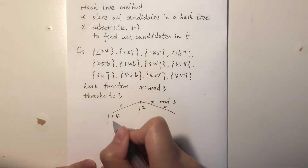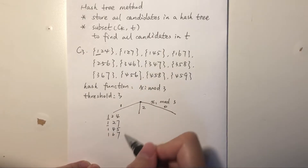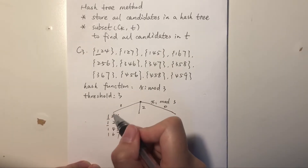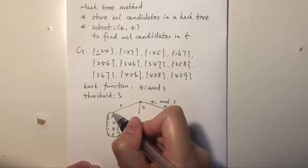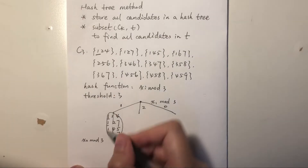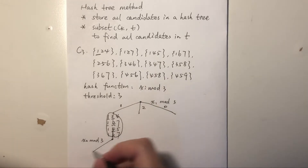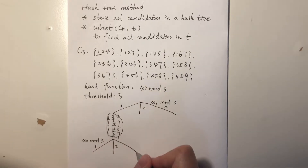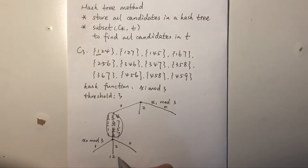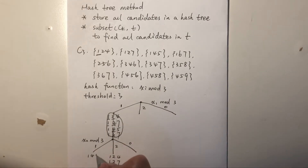Candidates {1,2,7} also have first element 1 mod 3 = 1, same for {1,6,7}. Now this node has 4 items and exceeds the threshold of 3, so we need to split this node using a second hash function x_i mod 3 — this time checking the second element in the candidate. It also has three branches: 0, 1, and 2. So {1,4,5} goes here, {1,2,7} goes to the branch for 2, and {1,6,7} goes to another branch.